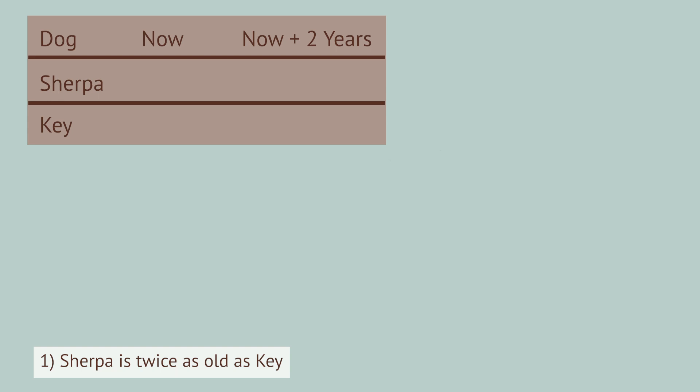The first sentence says that Sherpa is twice as old as Key. We can write that as S equals 2 times K. The next sentence says that in two years, Key will be three-quarters as old as Sherpa.